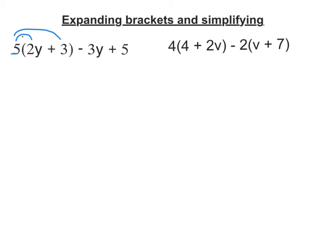5 times 2y is 10y. 5 times 3 is 15. Now add in my other two terms, minus 3y and 5. Now we need to simplify, so we need to collect like terms.